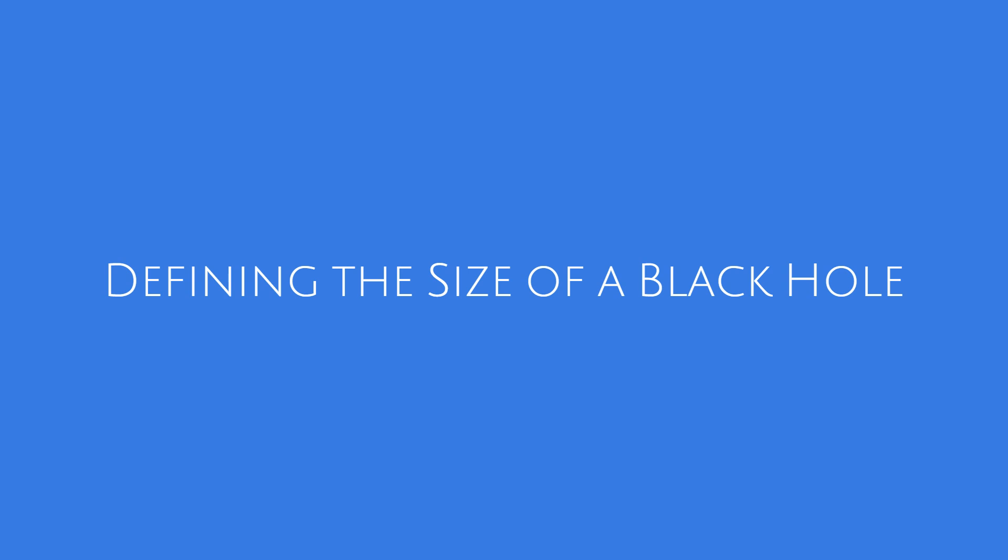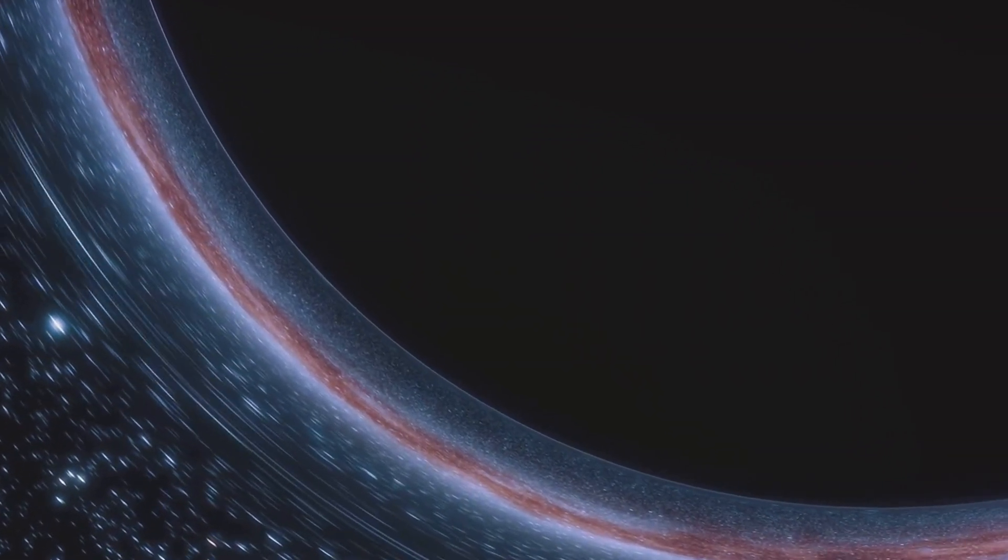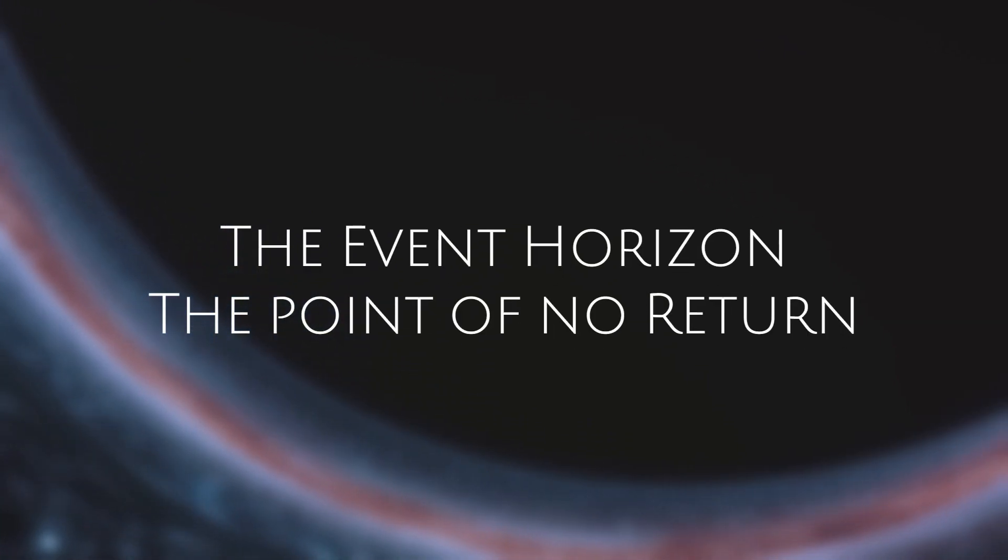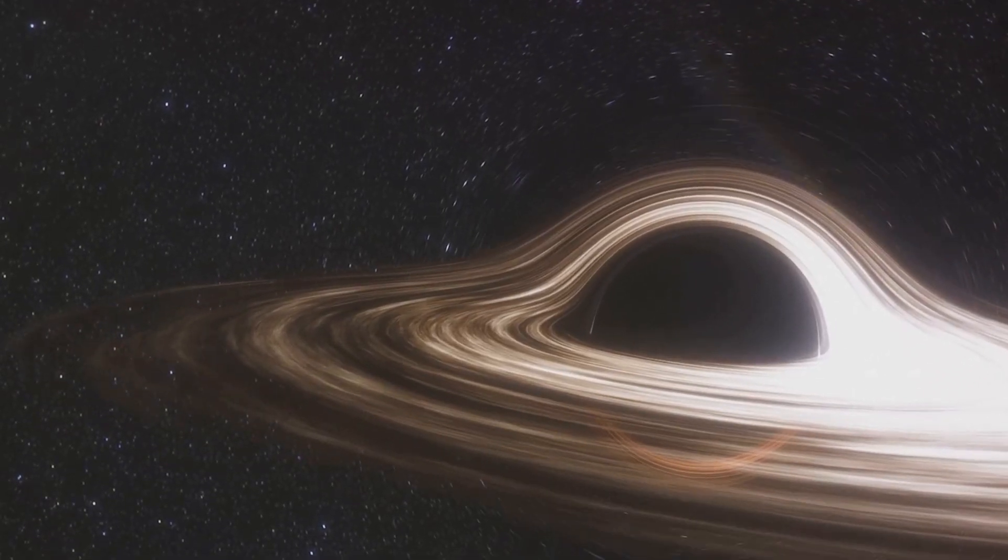When we talk about the size of a black hole, we're actually referring to its event horizon. The event horizon is essentially the boundary around a black hole, beyond which nothing, not even light, can escape the immense gravitational pull.